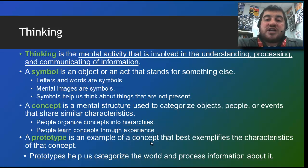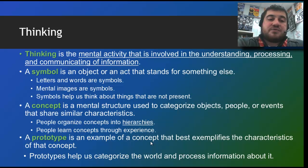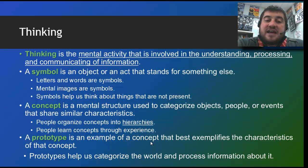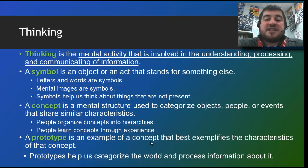Symbols help us think about things that are not present — obviously there are no horses around right now. A concept is a mental structure that we use to categorize objects into things that share similar characteristics. So, we might have horses — brown horses, black horses, tan horses. We organize those concepts into hierarchies, and people learn concepts through experiences. We assimilate things into these hierarchies and schemas. And a prototype is the best example of the characteristics of a concept. The best example of a horse would be a Mustang, in my opinion. It helps us categorize the world and process the information in it.